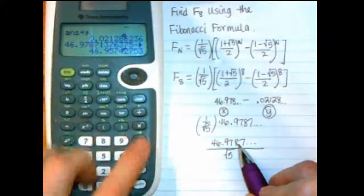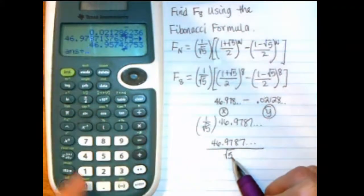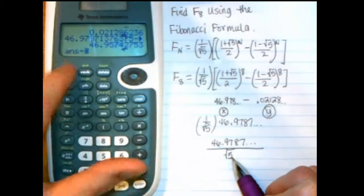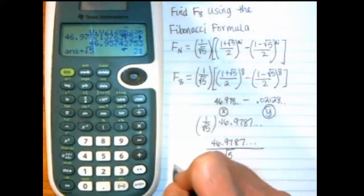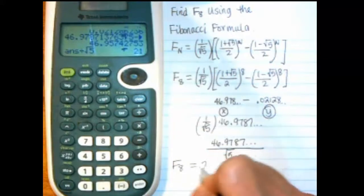So I take that value there, divided by, and then the square root of 5. So I can do square root 5, and then enter, and it gives me 21. So F sub 8 is 21.